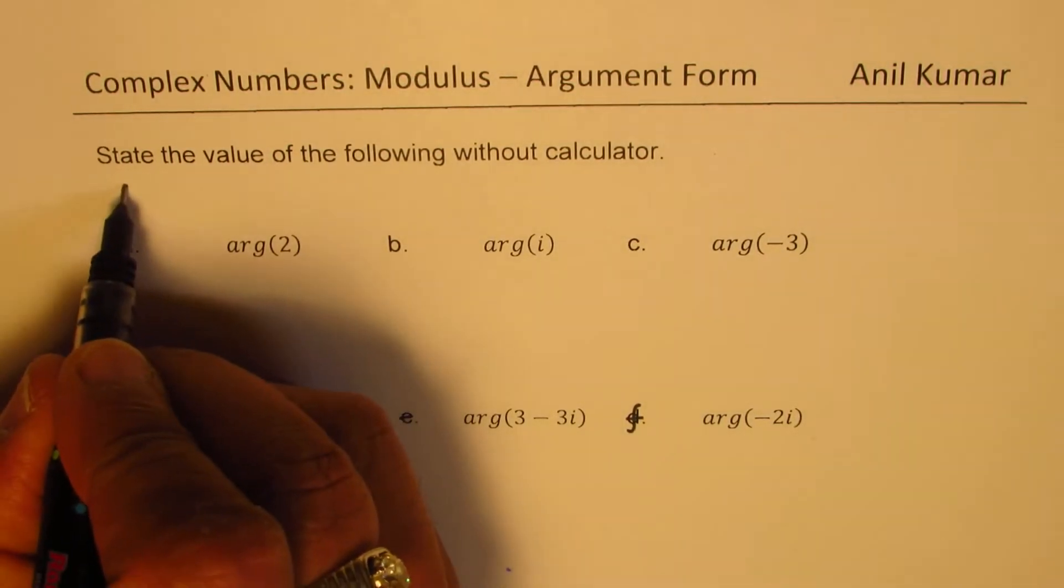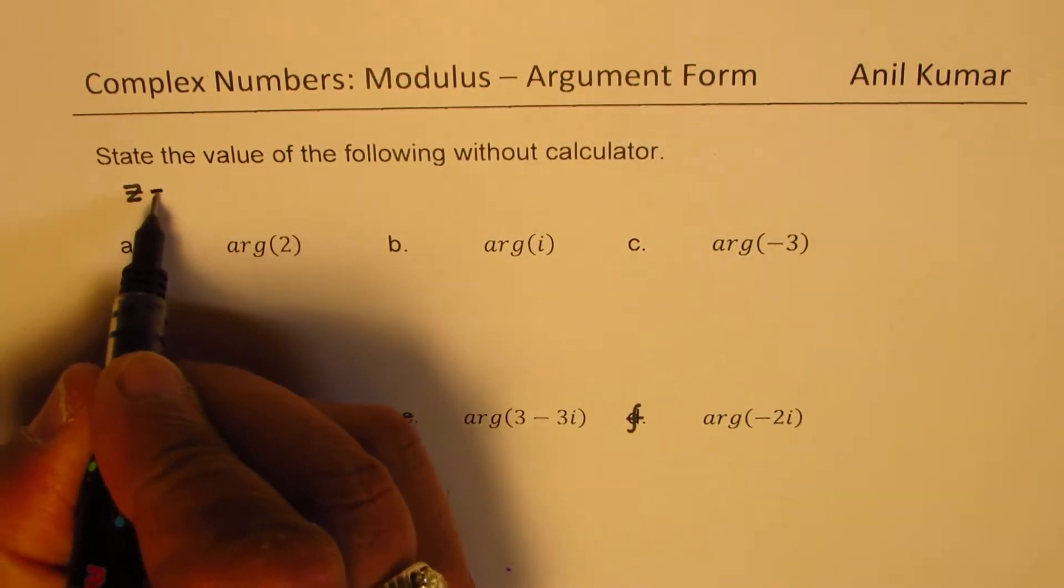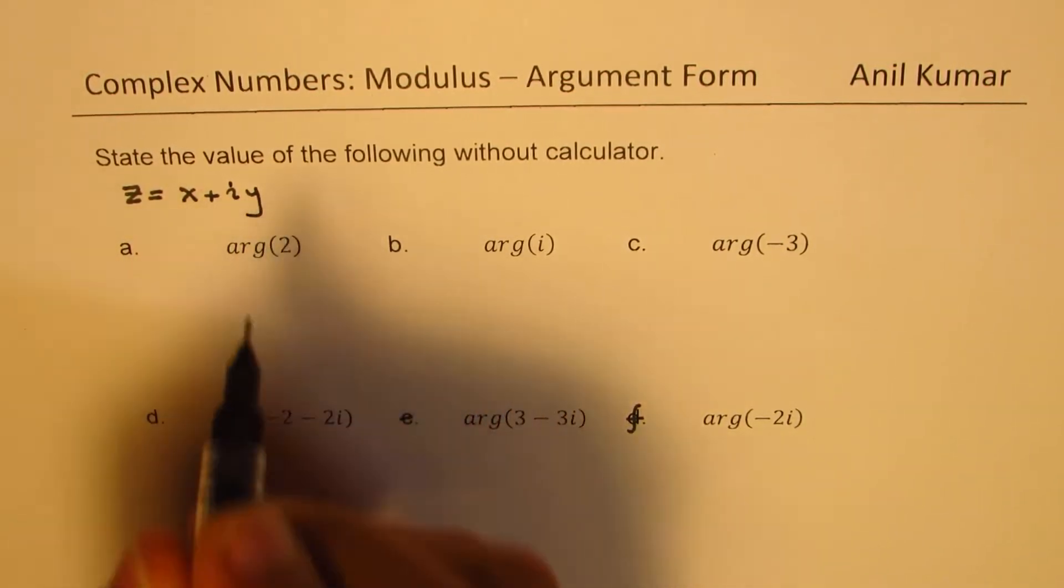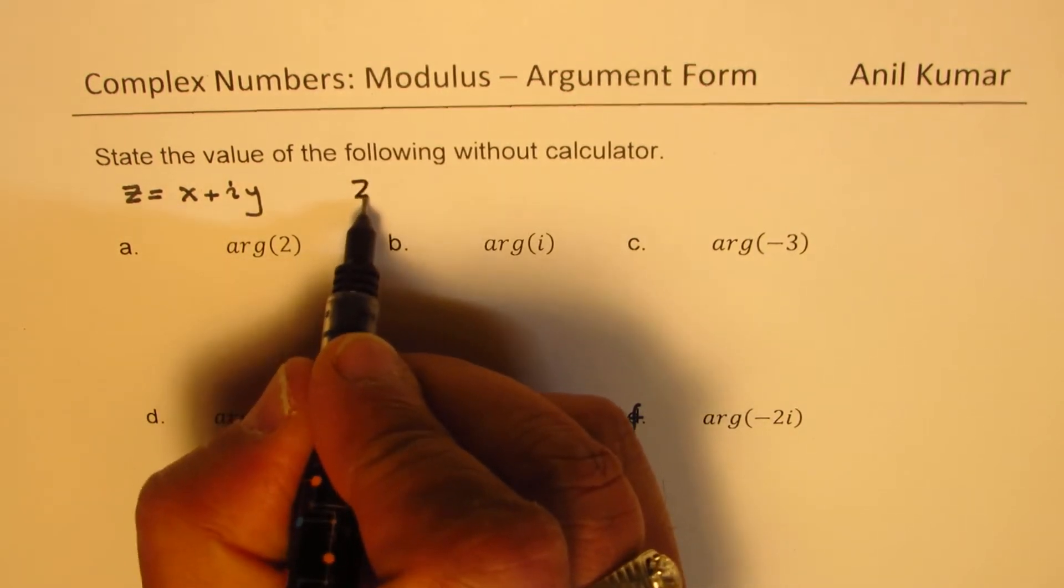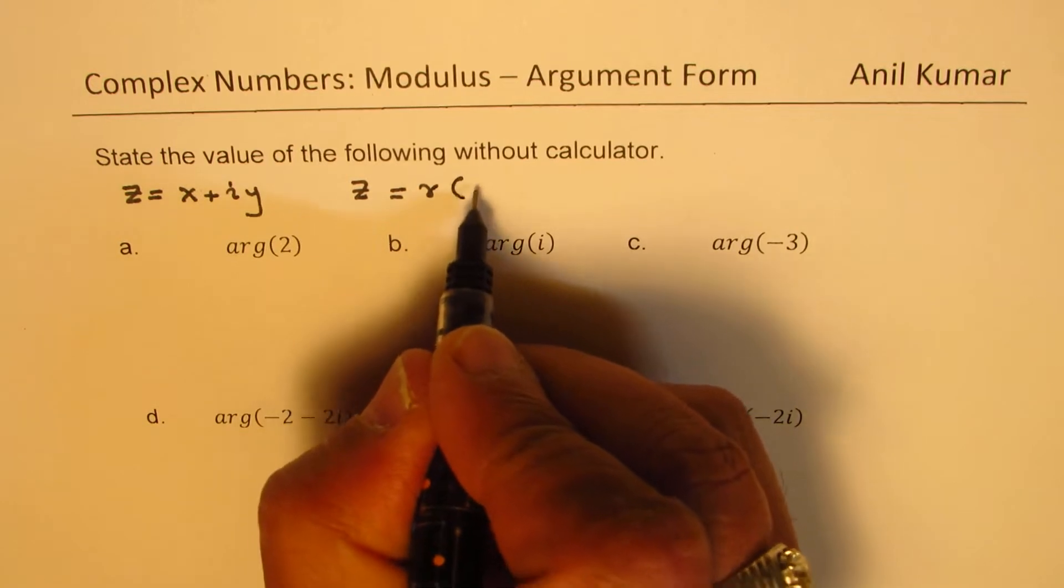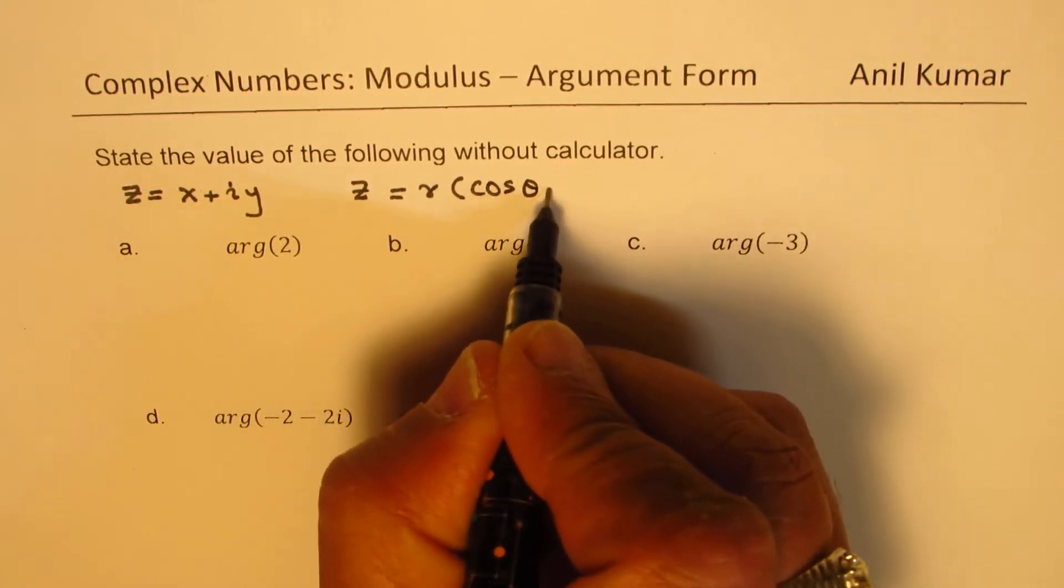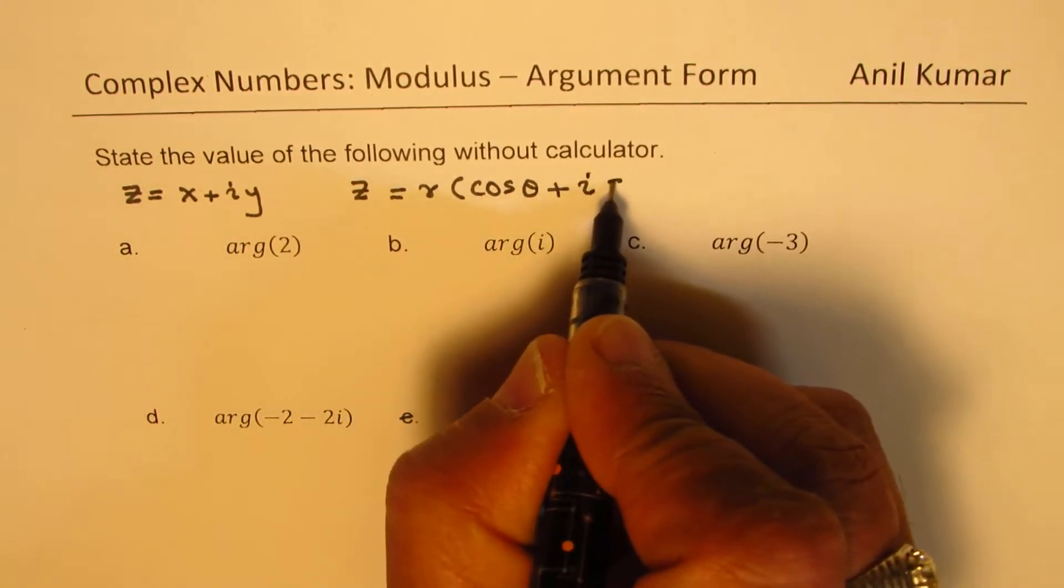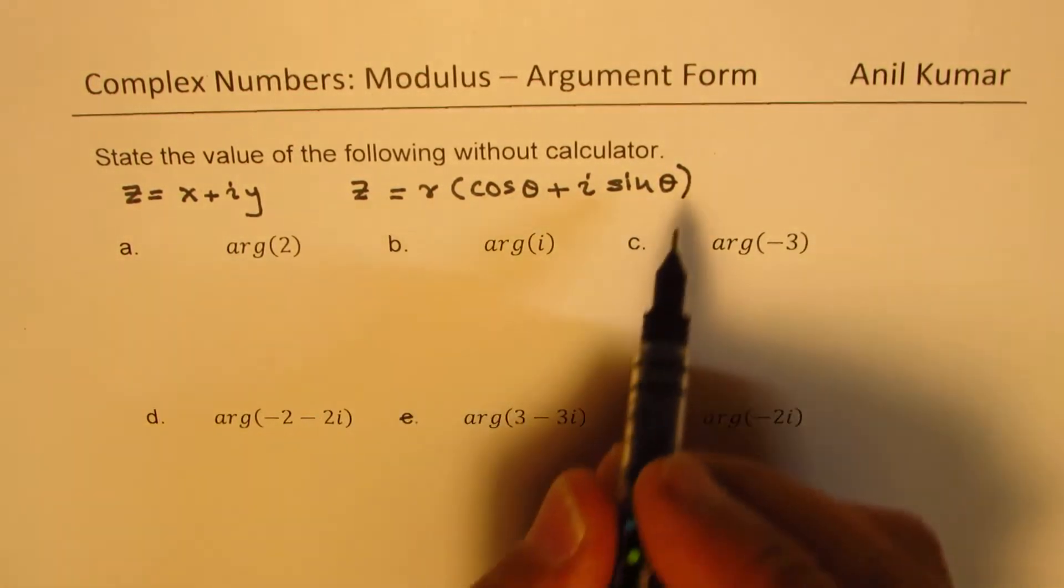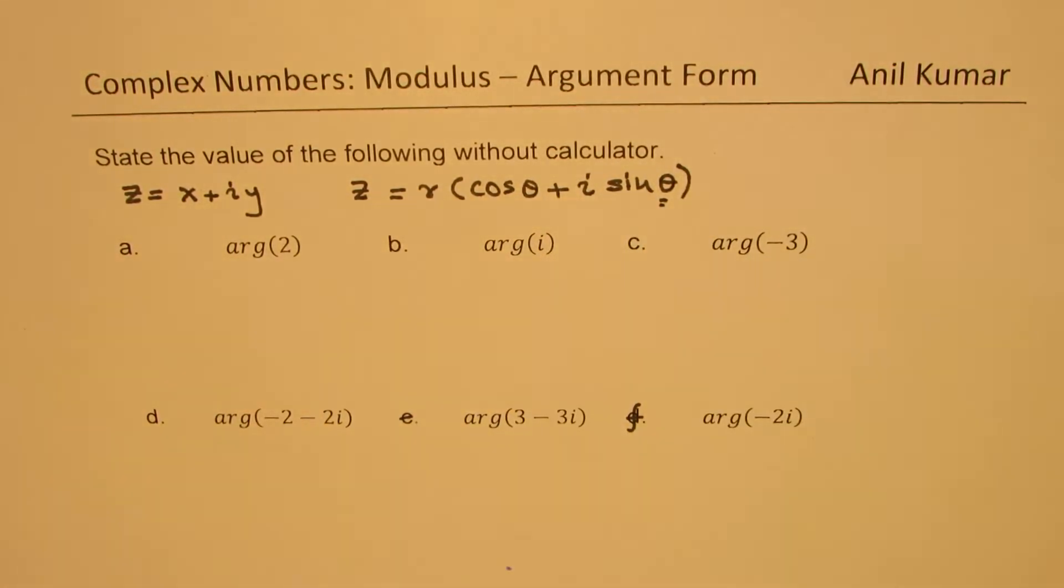Well, any complex number z, which can be written as x plus iy, we could also write this in the form z equals r times cos theta plus i sine theta. So what we are talking about is the calculation of this angle theta.